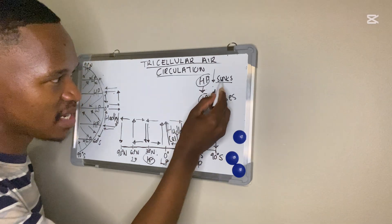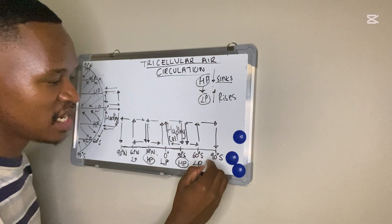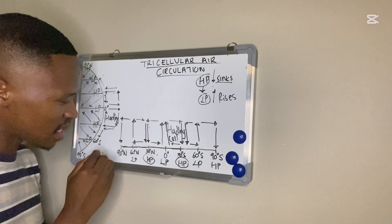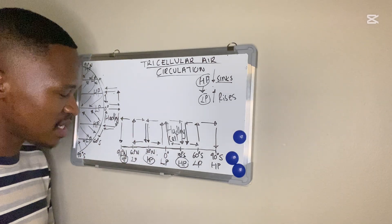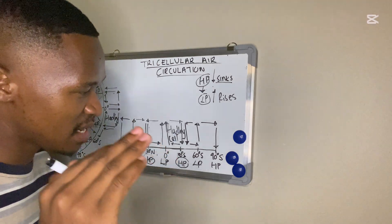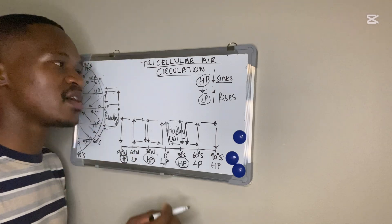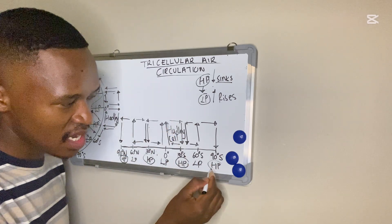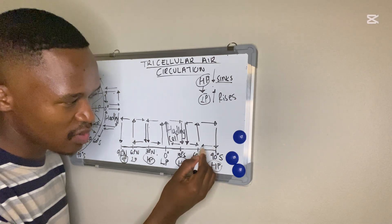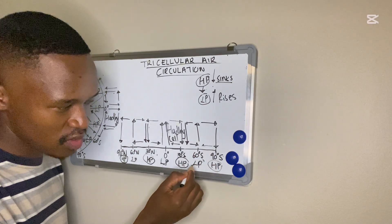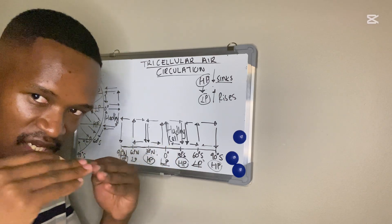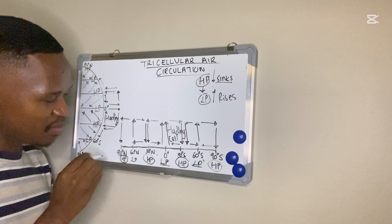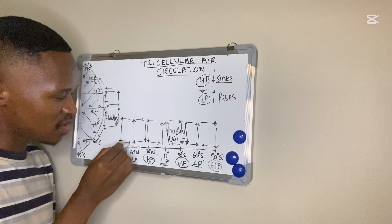When the air sinks at the poles, it forms a high pressure belt known as the polar high pressure belt. We know that winds always blow from a high pressure toward a low pressure, so from the polar high pressure belt the winds at the surface must converge toward the subpolar low pressure belt at 60 degrees. This completes the circulation in this region.